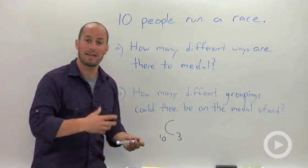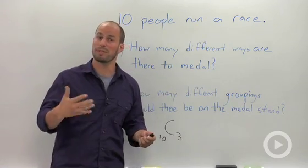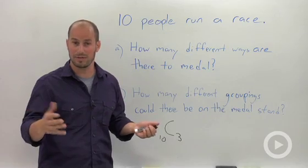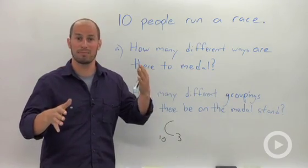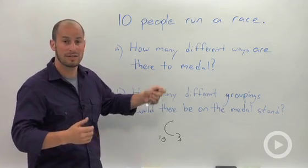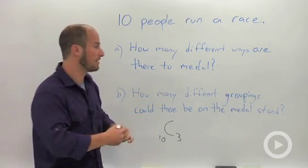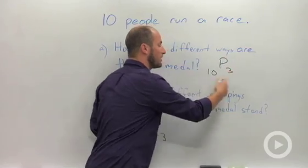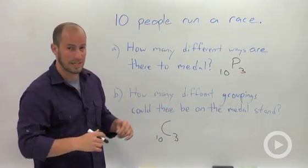The difference with that and permutations is with permutation, order matters. So if we switch the first and the third person, we're going to get a completely different permutation. We've switched the gold and the bronze, we're going to get a completely different result. So this one, the different ways are there to medal is a permutation. The numbers are exactly the same. So this is still 10 and 3, but instead of choosing, we are now using a permutation.